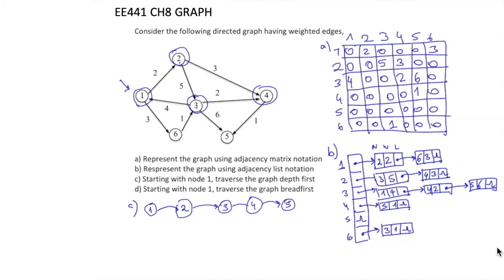From node 5 there is no other node to visit, so we turn back to node 4. Node 5 is now visited and there is no other node, so we backtrack through node 3 back to node 2, then back to node 1. At node 1, there is a node which is not yet visited — node 6. From node 6 there is no other unvisited node, so all nodes are visited and we turn back to node 1.